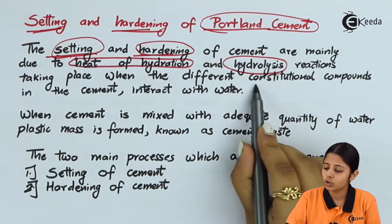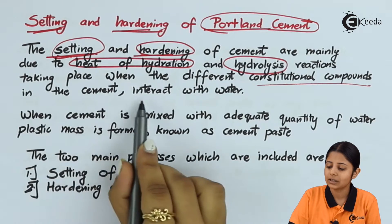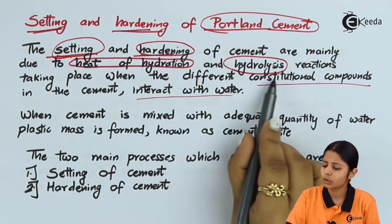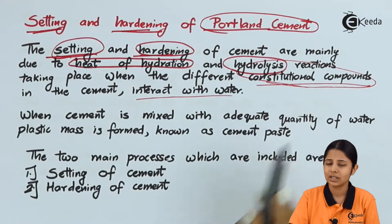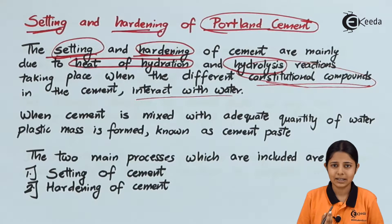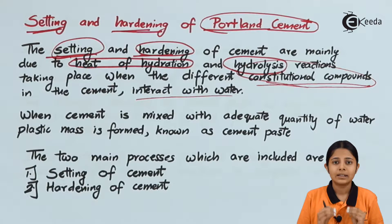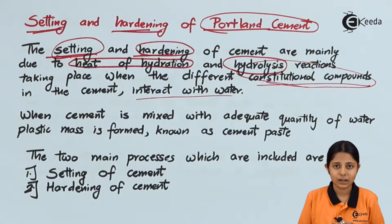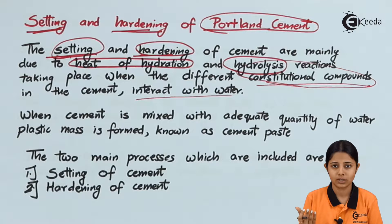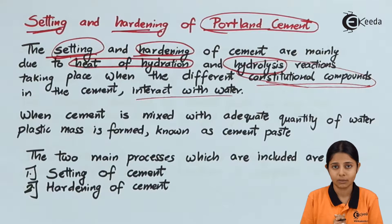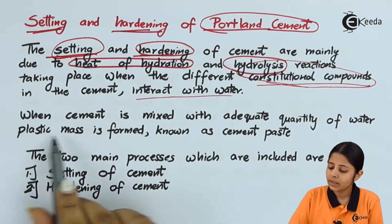Heat of hydration and hydrolysis reactions are two important reactions taking place when the different constitutional compounds in the cement interact with water. These compounds include lime, silicates, and aluminates. When all of these compounds get mixed with water, a reaction happens between them and the water, leading to heat — known as heat of hydrolysis — and water mixing into the cement, known as the hydrolysis reaction.